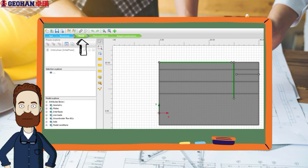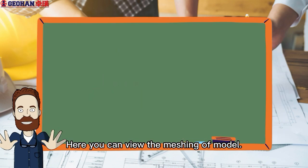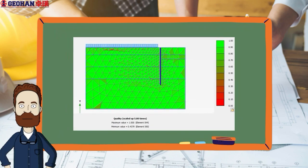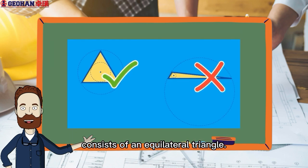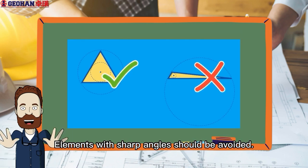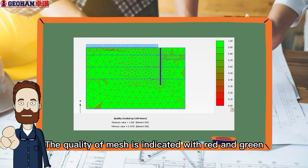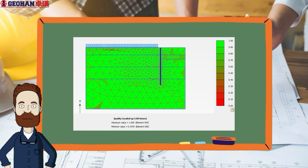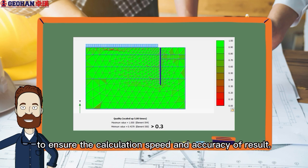Let's move on to Mesh tab. Generate Mesh and View Mesh. Here you can view the meshing of model and the mesh quality. A perfect face of a mesh element consists of an equilateral triangle. Elements with sharp angles should be avoided. The quality of mesh is indicated with red and green color, from the scale of 0 to 1. The minimum value should be larger than 0.3 to ensure the calculation speed and accuracy of result.